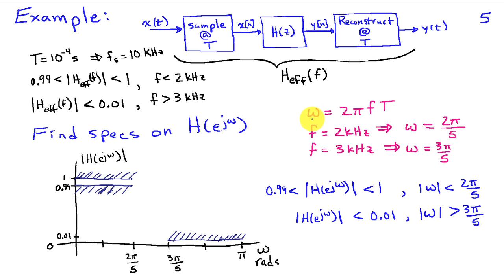Well, the key step here is in recalling that the relationship between discrete time frequency omega and continuous time frequency f can be obtained using the sampling interval t as omega is equal to 2 pi f times t.